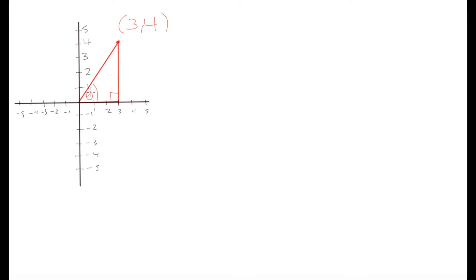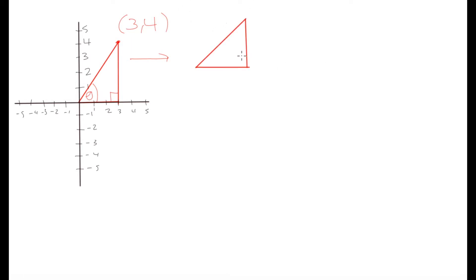Here is our right angle, and opposite it we have the hypotenuse. Now we can determine the angle theta — this is the angle created between the x-axis and the line joining the origin to our coordinate. Let's redraw the triangle so it's easier to see. We have the right angle and theta over here. This vertical side has a length of four units, since y equals 4.